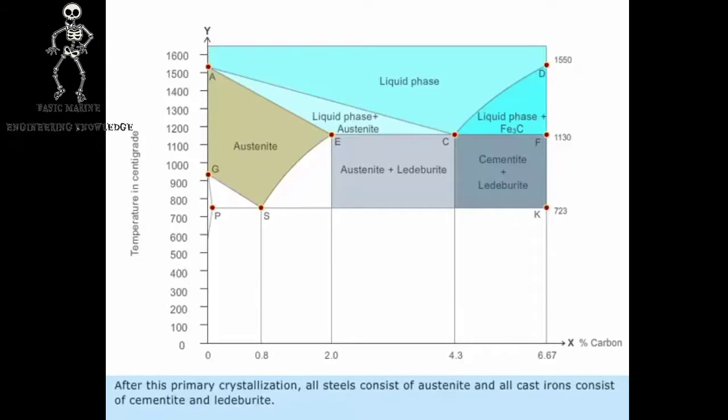After this primary crystallization, all steels consist of austenite, and all cast irons consist of cementite and ledeburite.